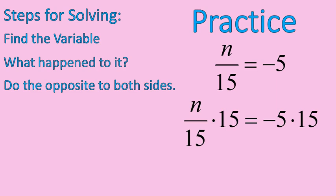So I look, where is my variable? n. What happened to my variable? It was divided by 15. So I'm going to multiply both sides times 15. n divided by 15 times 15. 15 divided by 15 leaves me with 1, 1n on the left side of this equation, and negative 5 times 15 gives me negative 75.